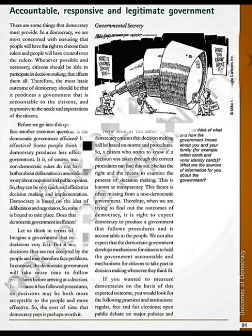Government should be accountable — citizens will ask for answers. Government is accountable to the citizens in democracy and will be responsible for all its decisions. Government has to give answers to its citizens because citizens only elected the government; power to the government is given by the people. Government will work in a proper manner if they know the pressure is on their head.